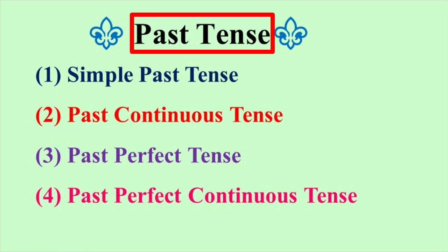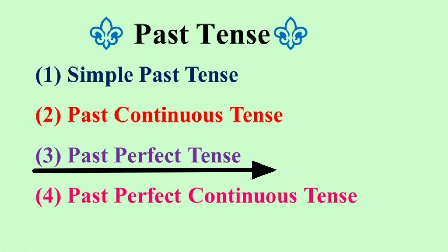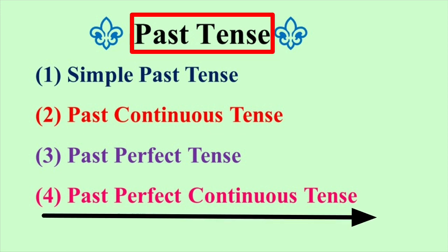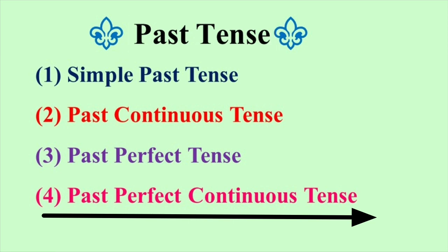4. Past Perfect Tense. 5. Past Perfect Non-Progressive Tense. 6. Past Perfect Continuous Tense. 7. Past Perfect Progressive Tense.